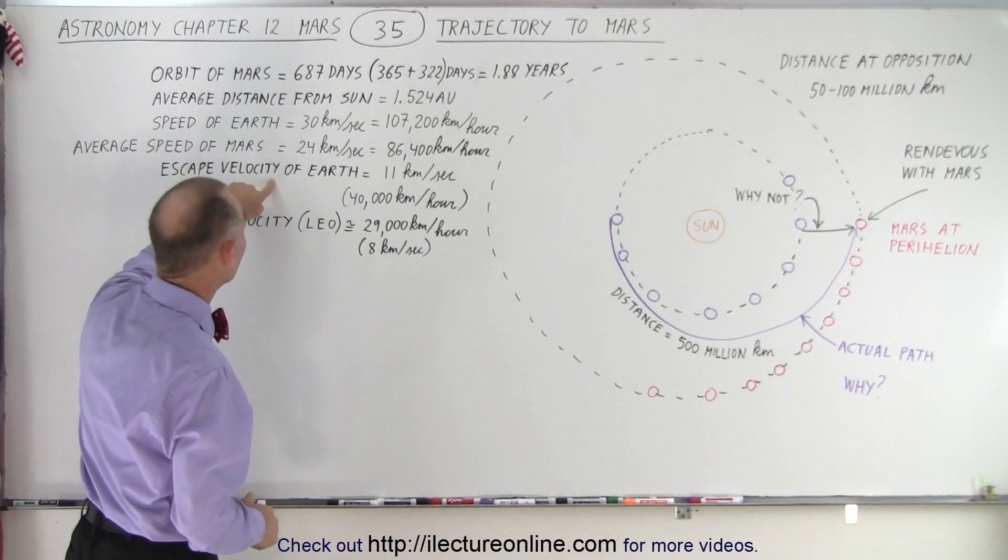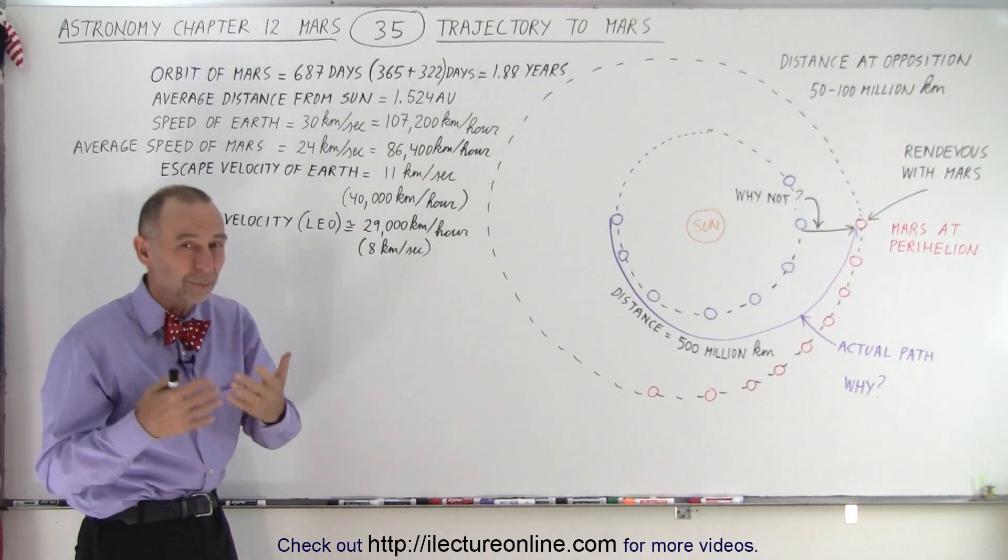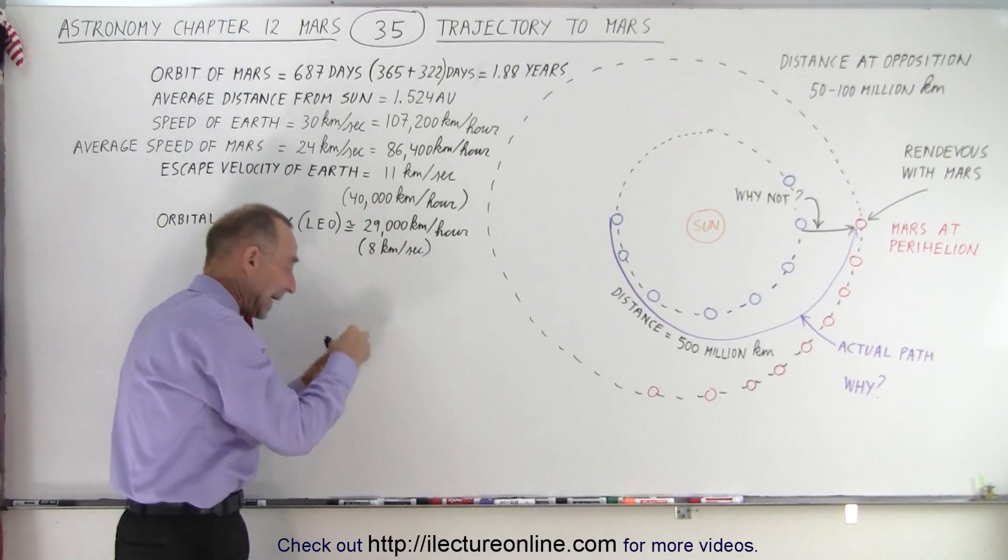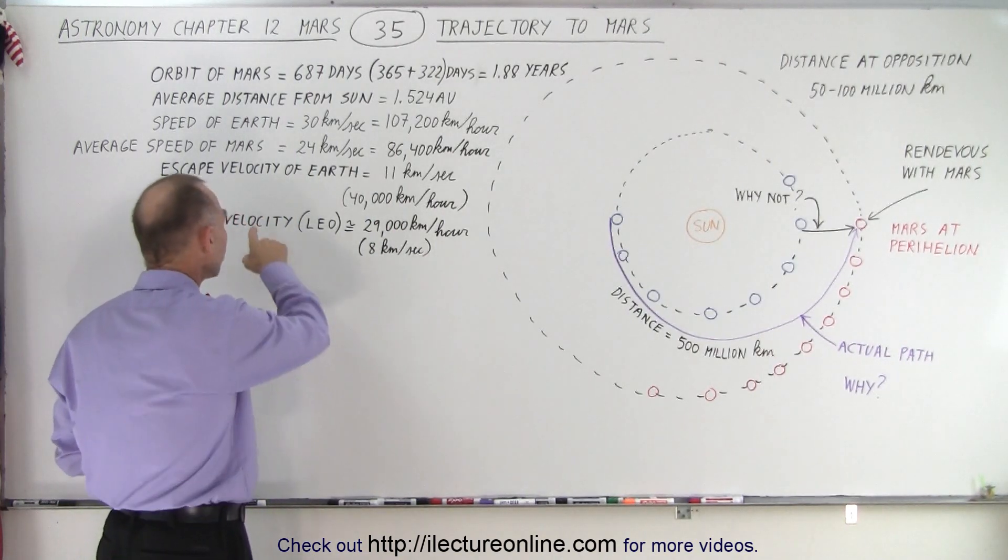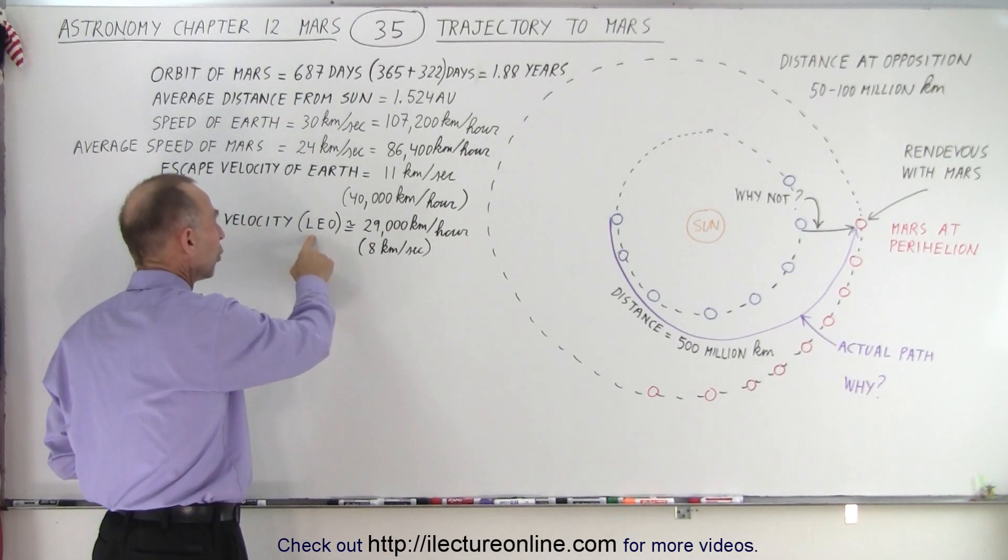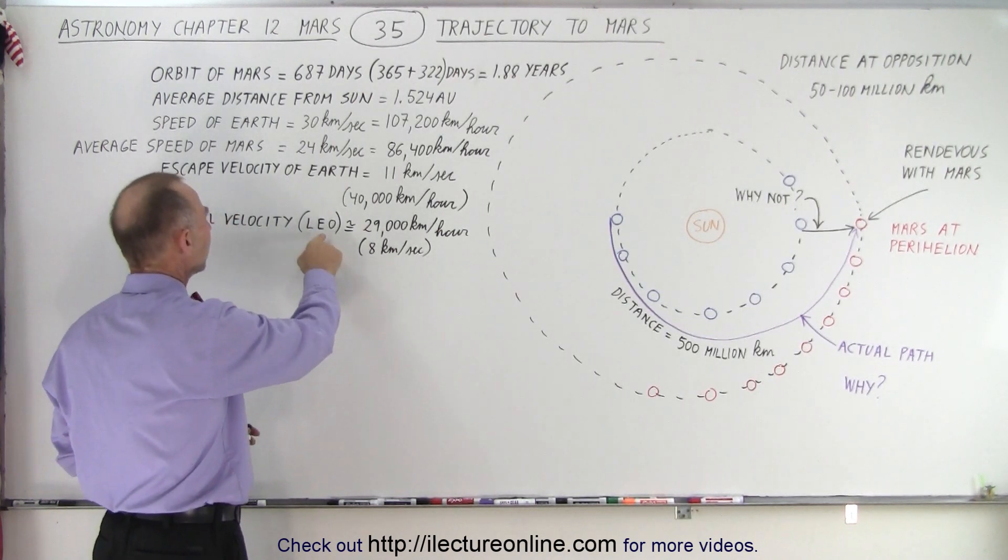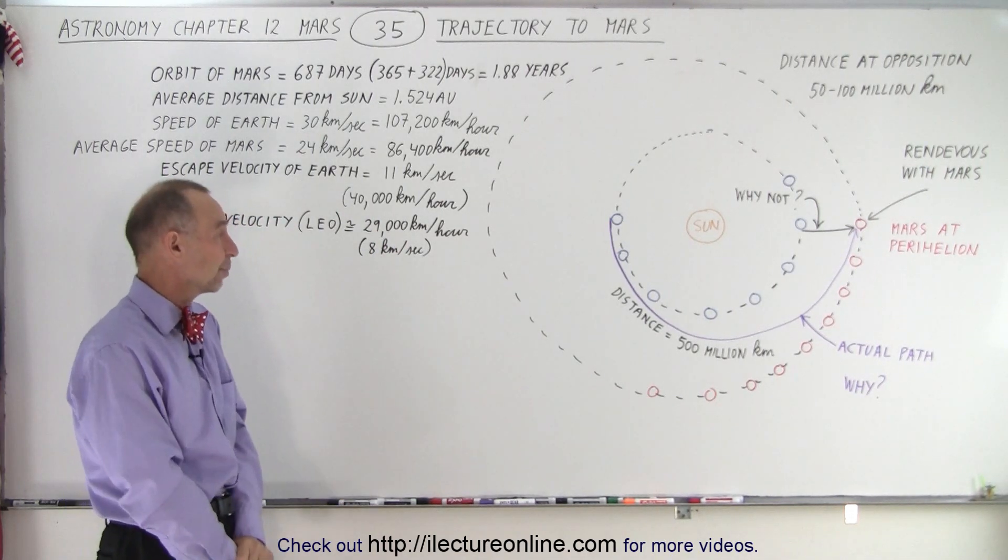Now, the escape velocity of the Earth is 11 kilometers per second, or 40,000 kilometers per hour, which means that a spacecraft needs to travel at least 40,000 kilometers per hour in order to get away from the gravitational pull of the Earth. The orbital velocity around the Earth, low orbit, low Earth orbit as we call it, is about 29,000 kilometers per hour, about 8 kilometers per second.